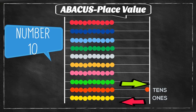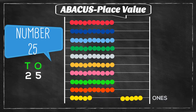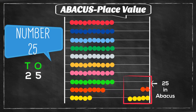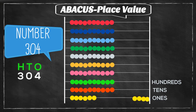If we show number 25, five is in the ones place and two is in the tens place — the child needs to move five beads in the ones place and two beads in the tens place. Similarly, for 304, four is in the ones place, zero is in the tens place, and three is in the hundreds place. We move four beads in the ones place and three beads in the hundreds place, and the tens place stays empty.